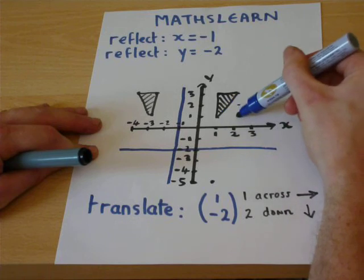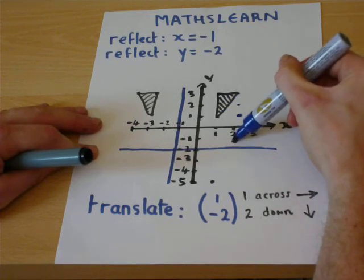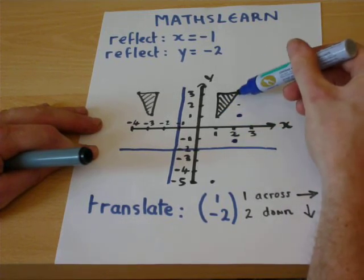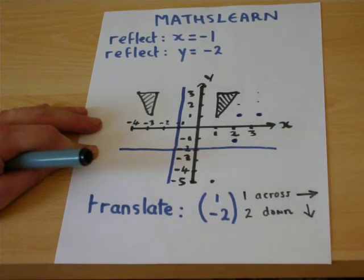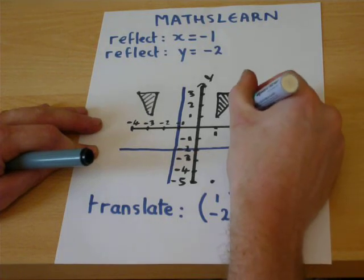Here we are. 1 across, 2 down. Over here. 1 across, 2 down. And then we'll just construct the shape.